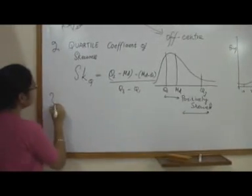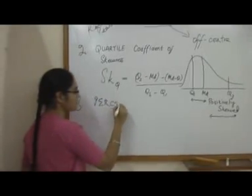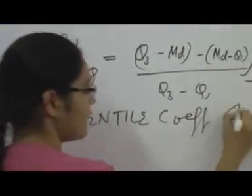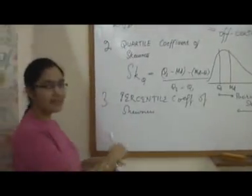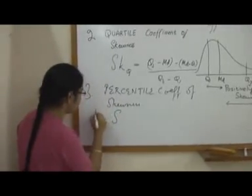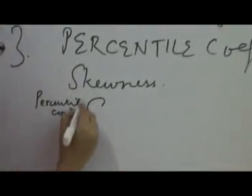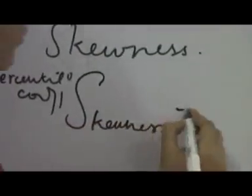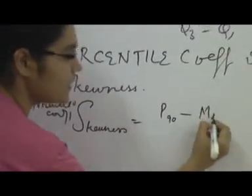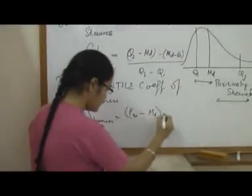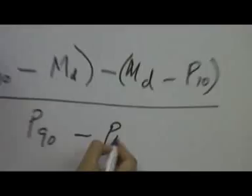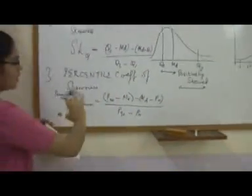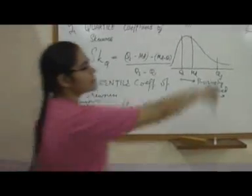The third coefficient of skewness is the percentile coefficient of skewness. Percentiles divide a distribution into 100 equal areas, and we use the 10th and 90th percentiles in this formula. The percentile coefficient of skewness is equal to (P90 minus median) minus (median minus P10), all divided by (P90 minus P10), where the median is P50. This formula will measure whether your distribution is positively or negatively skewed, with the same sign rule applying.